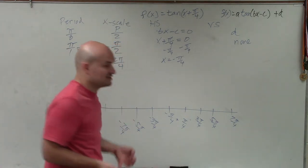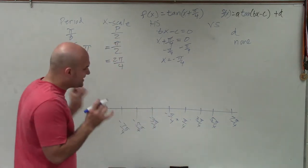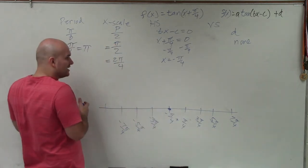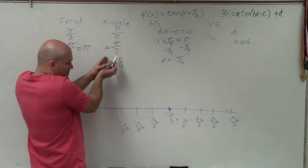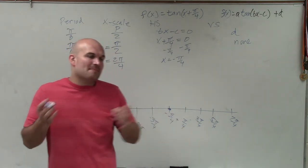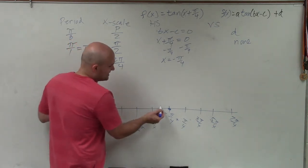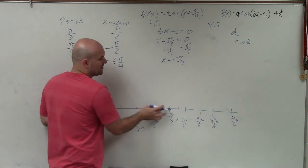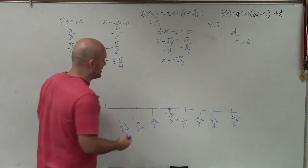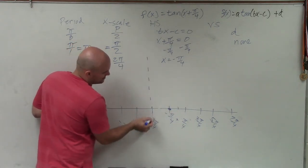Now that we know the starting point, we need to understand what the parent graph of tangent looks like. At the starting point for tangent, that is going to be the x-intercept. At the next two scale values, that's why I divide the scale by 2 — because I only care about where it crosses and then the two asymptotes. If you want to cut up the scale into fourths you can find the actual values of tangent, but mainly I want to know where the intercept is and how to find the next two asymptotes.